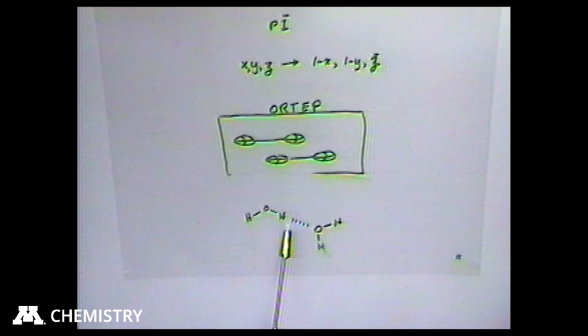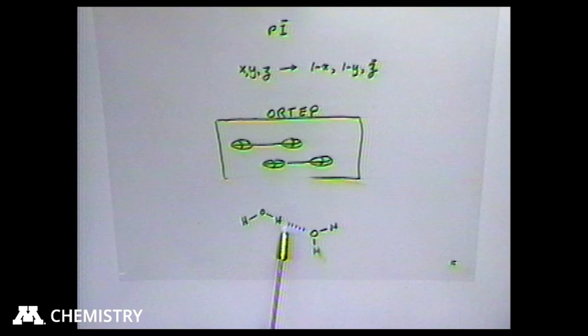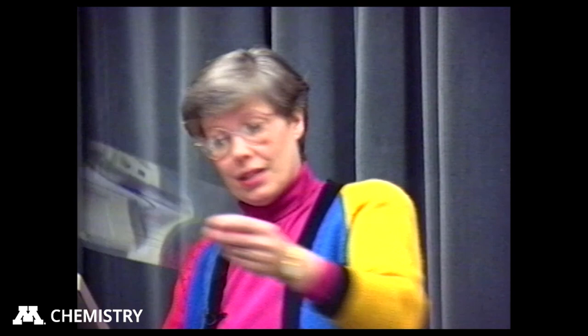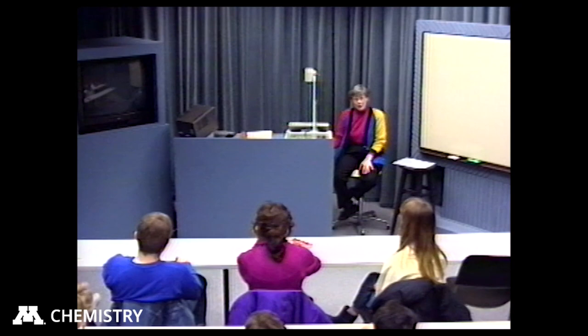I'm mostly going to talk about hydrogen bonds today, but the idea of graph sets is not limited to hydrogen bonding — it's a more general concept. This focuses on the intermolecular interaction that we care about and think is important to the properties of the material. But if you're comparing 70,000 structures and have to draw them all out, you're stuck. You have the information in front of you but can't work with it conveniently. It's really a communication problem.